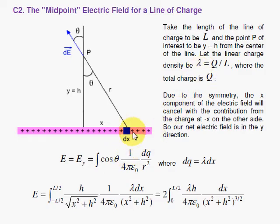So to find the charge in this little region, dx, you would simply take lambda times dx, and that's dQ.